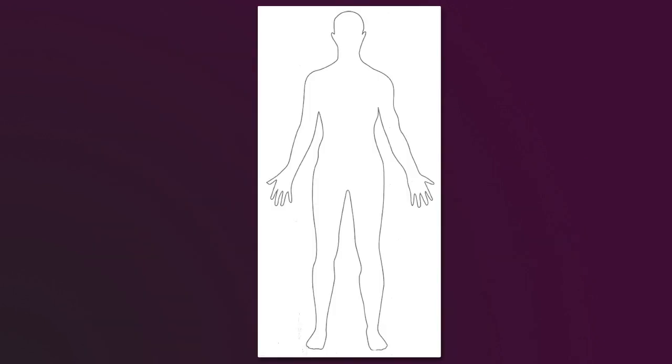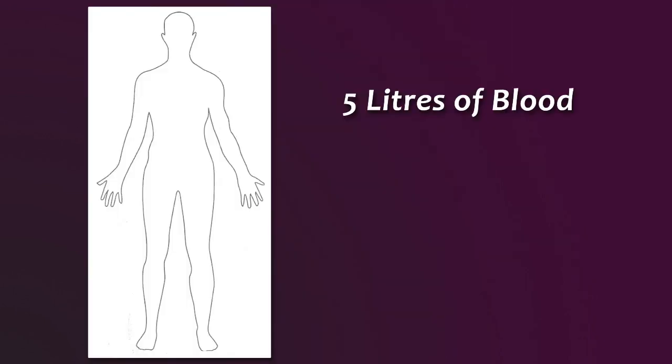An adult human body contains about 5 litres of blood, of which 3 litres are water. No matter how thirsty you feel or how much water you swallow, the amount of water in your blood remains the same.